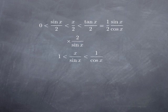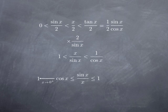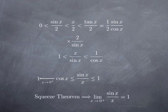Taking reciprocals reverses the direction of the inequalities, and we obtain that sin x over x is between cos x and 1. As x approaches 0, cos x approaches 1. Therefore, sin x over x is between a function going to 1 and the constant 1, so by the squeeze theorem, the limit as x approaches 0 from the right of sin x over x is 1.